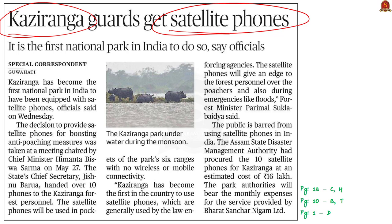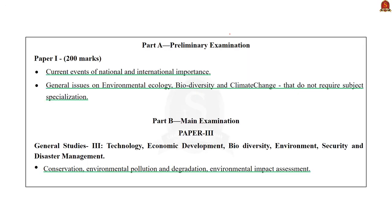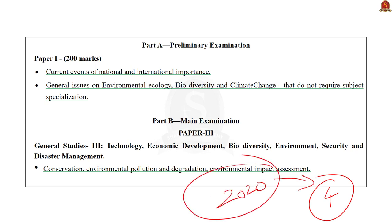In this context, we will discuss Kaziranga National Park from a prelims perspective. National Parks and wildlife sanctuaries are an important topic for prelims. For example, in the 2020 prelims question paper, almost four questions were asked from National Parks and wildlife sanctuaries — out of 100 questions, four came from this topic. So it is a high-priority topic.